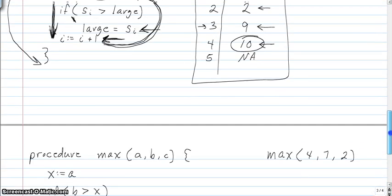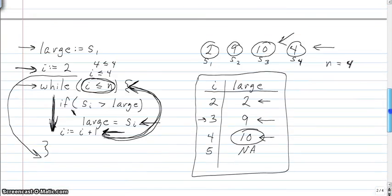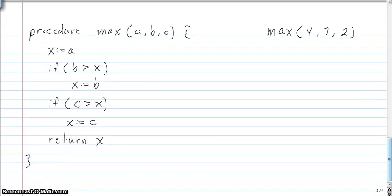Okay, so the last thing I wanted to talk about, we talked about the for loop and the while loop, is what's called a procedure, or sometimes you see this called a function, which might make more sense with the mathematical ideas that we've talked about.